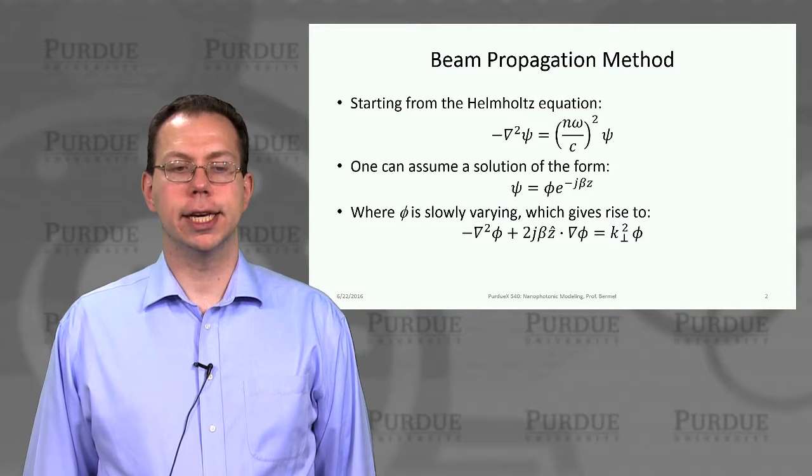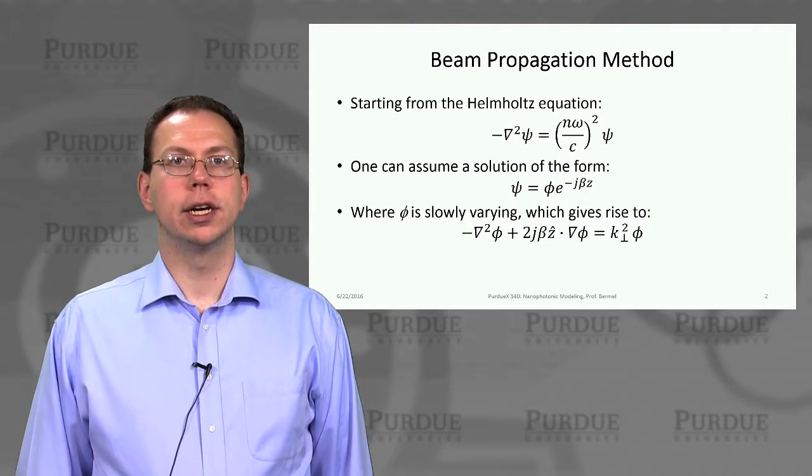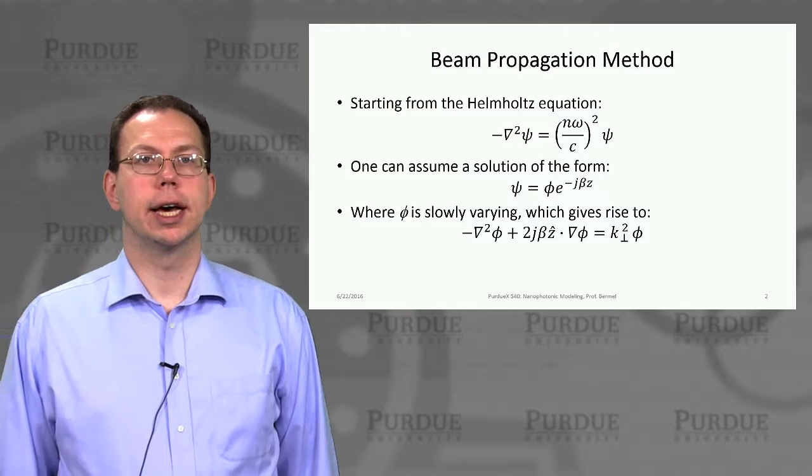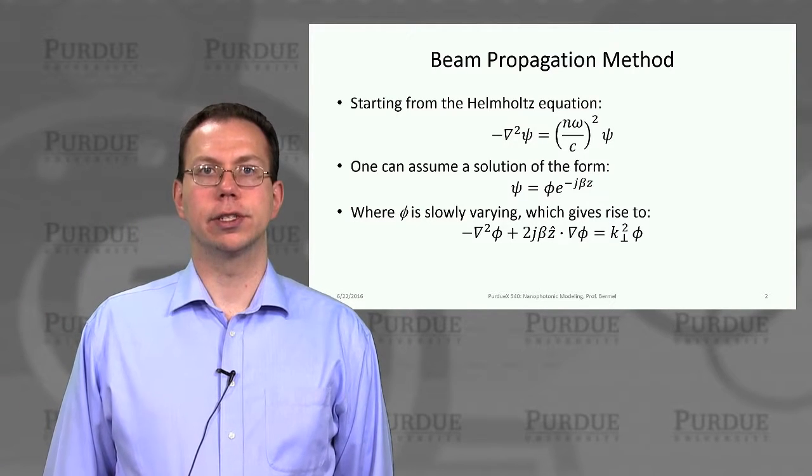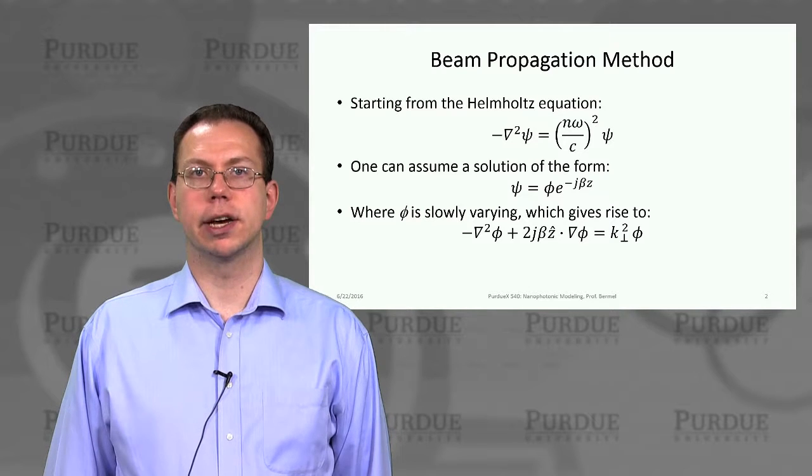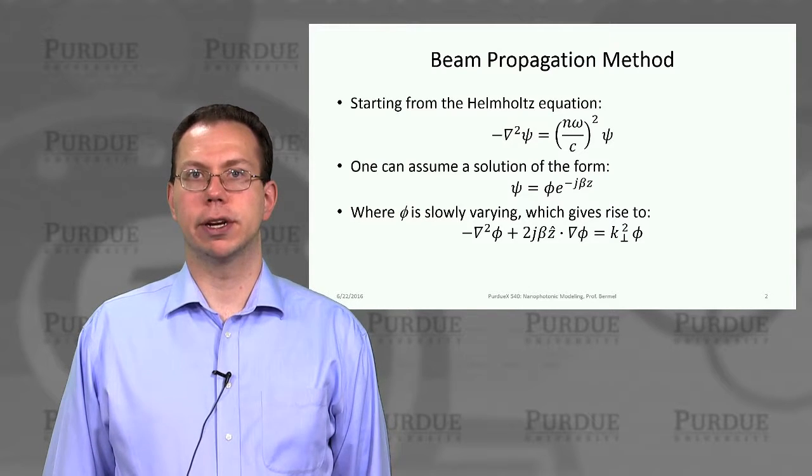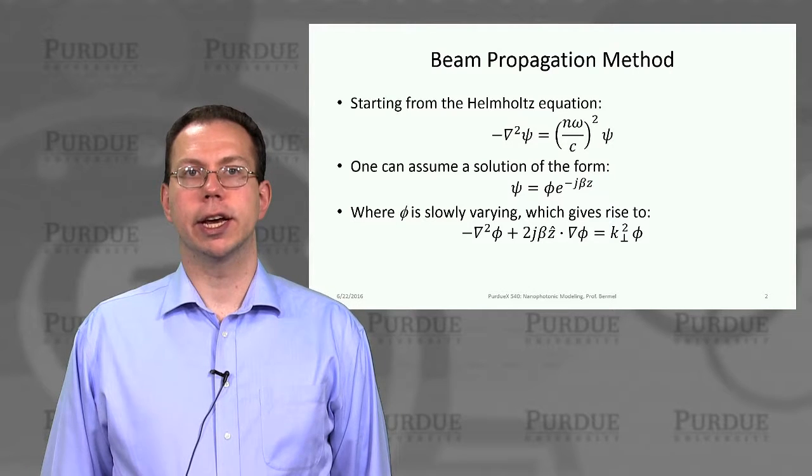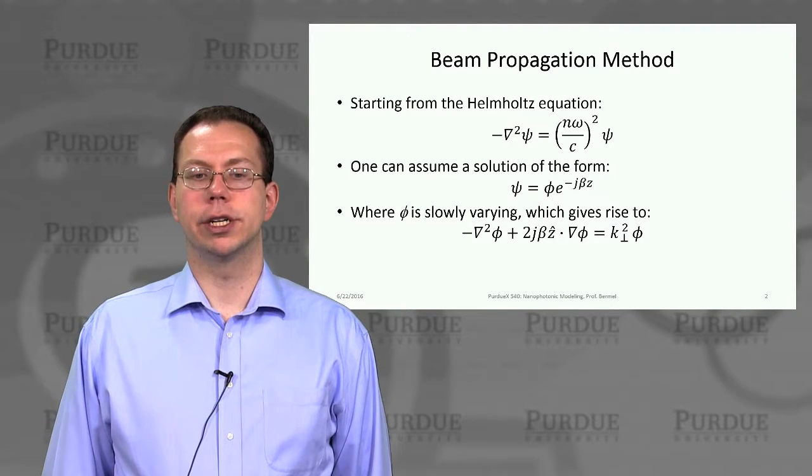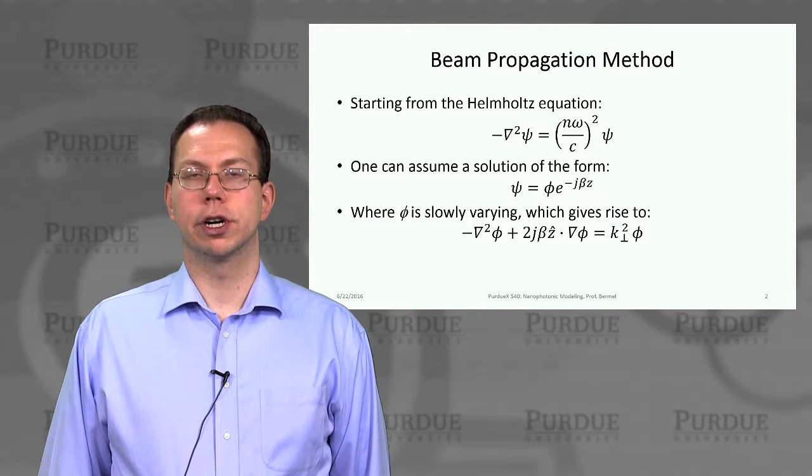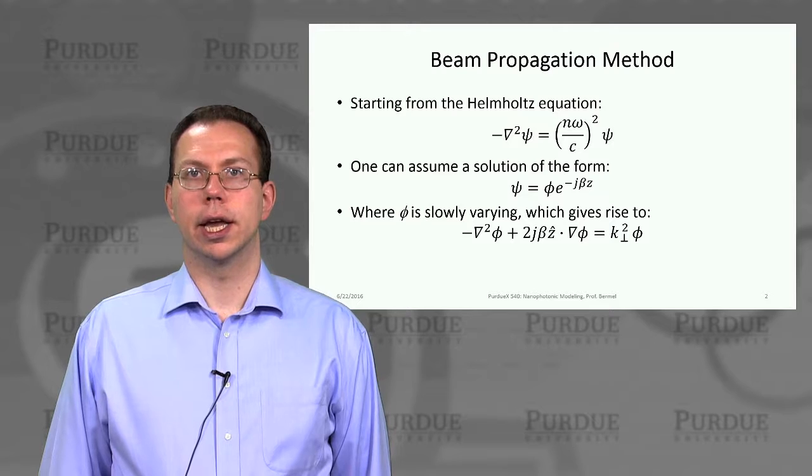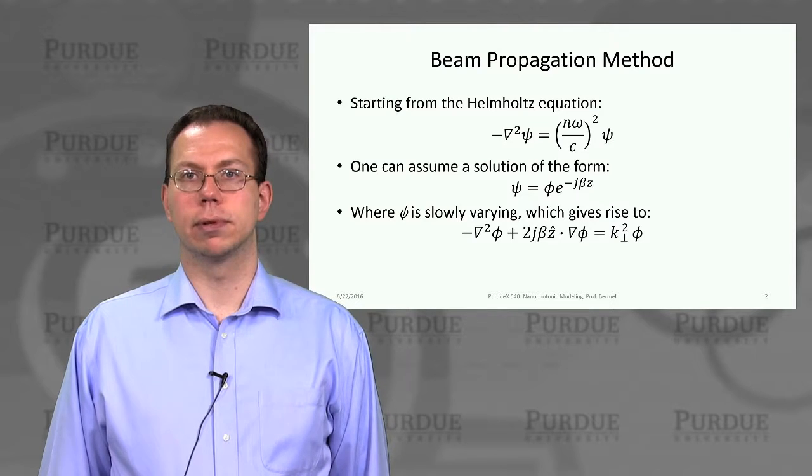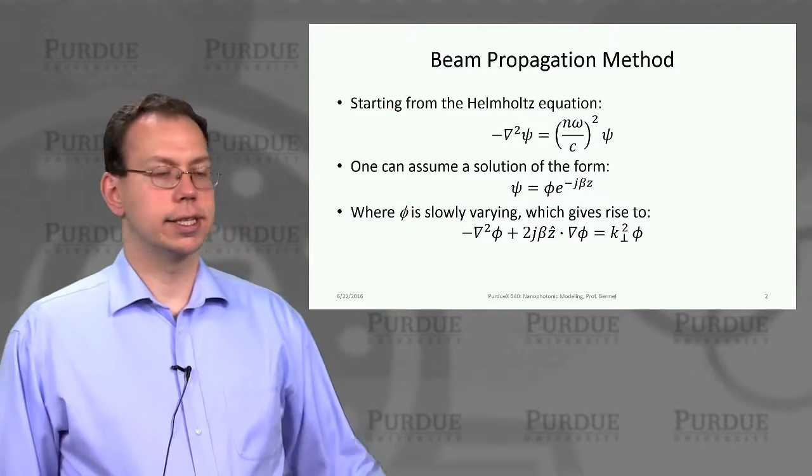We're starting with the Helmholtz equation, which is very similar to the photonic crystal master equation we had earlier, except now we're assuming epsilon inverse is a constant. We take the epsilon inverse from our master operator curl of epsilon inverse curl of h and move it to the other side so it looks like just epsilon. Epsilon can be written if it's real as n squared, so we have curl of curl of h equals n omega over c squared times h. Curl of curl can also be represented as minus the Laplacian.